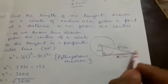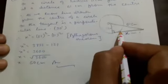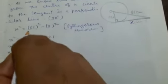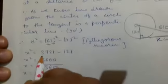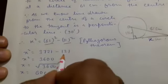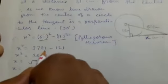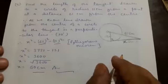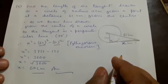As we know, the line drawn from the center to the tangent is 90 degrees, so this triangle is a right-angle triangle. By Pythagoras theorem, x squared equals 61 squared minus 11 squared, which equals 3721 minus 121 equals 3600. Therefore x equals root of 3600, so x equals 60 centimeters.